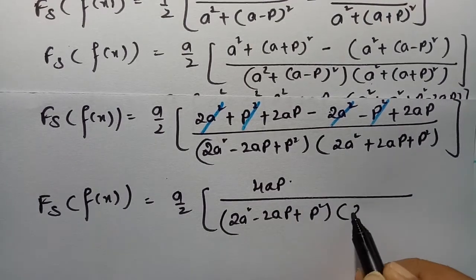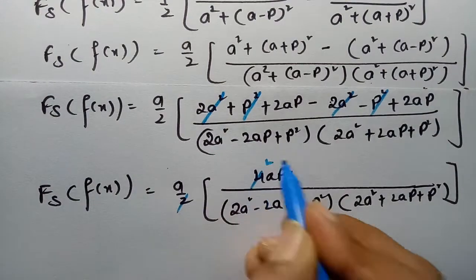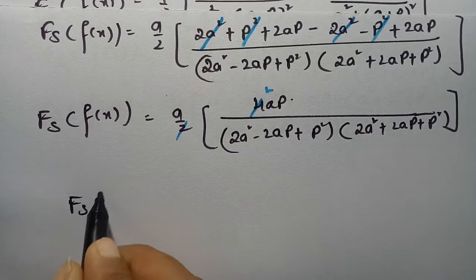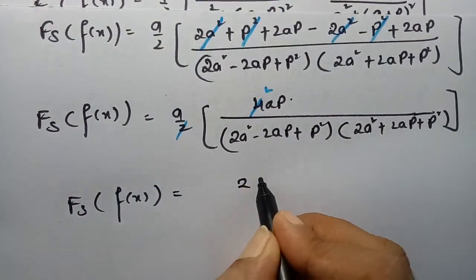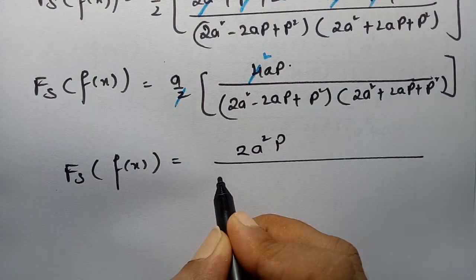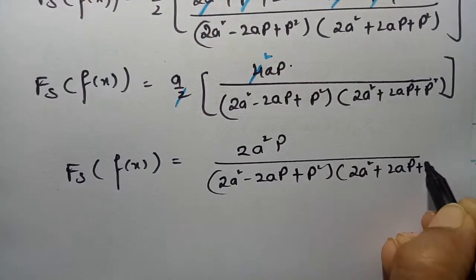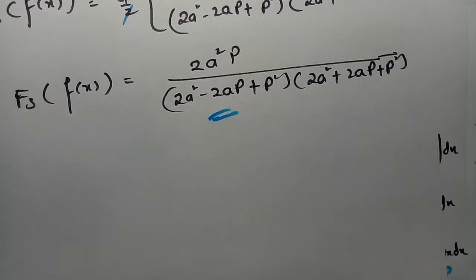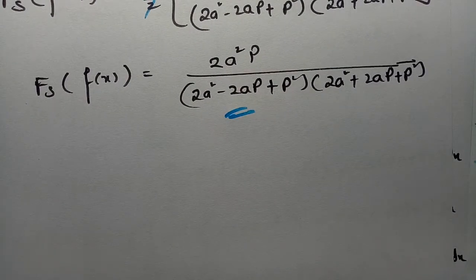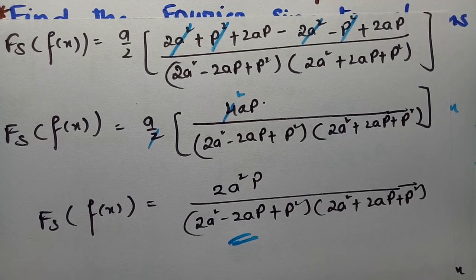Cancelling the factor of 2, the final answer is: the Fourier sine transform of f(x) = 2a²p / [(2a² - 2ap + p²)(2a² + 2ap + p²)]. This is the final answer and this is how we solve it. Please reach out with your problems in the comment box, subscribe to the channel, and many more videos are coming — thank you so much.